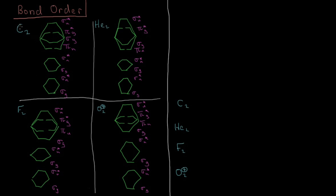So for example, our C2 molecule — carbon has a nuclear charge of 6, so 12 total electrons, so we would populate our MO diagram up like so.